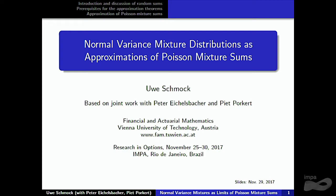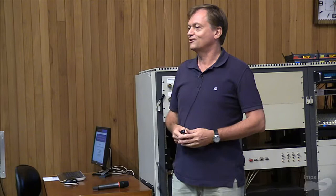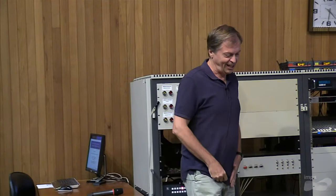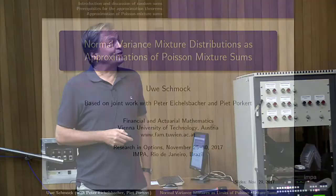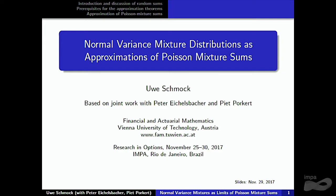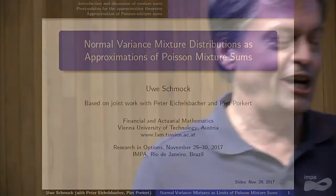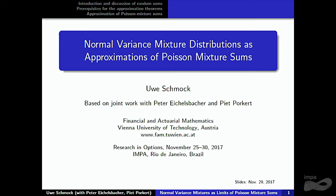This is a session of two talks by Uwe Schmuck and Georges Gibelli. We start with Uwe, who is going to talk about normal variance mixture distributions as an approximation of Poisson mixture sums. Thank you for the introduction, and thank you to the organizers, in particular to Georges Gibelli, for putting together such a nice conference and also the workshop over the weekend. And in particular, thanks for inviting me to come to Rio. Today I have the opportunity to report on joint work with Peter Eichelsbacher and a former PhD student, Pete Porkert. The talk will be more on mathematics and finance, and not so much on options.